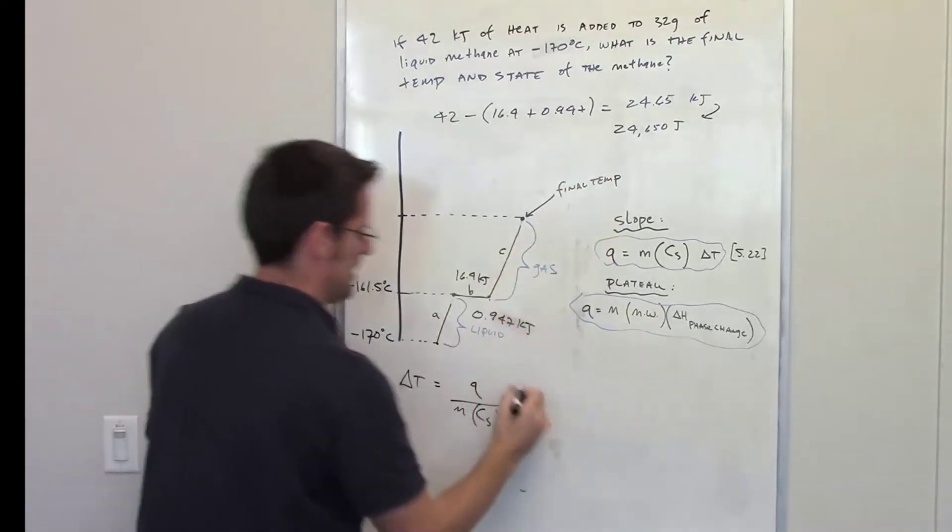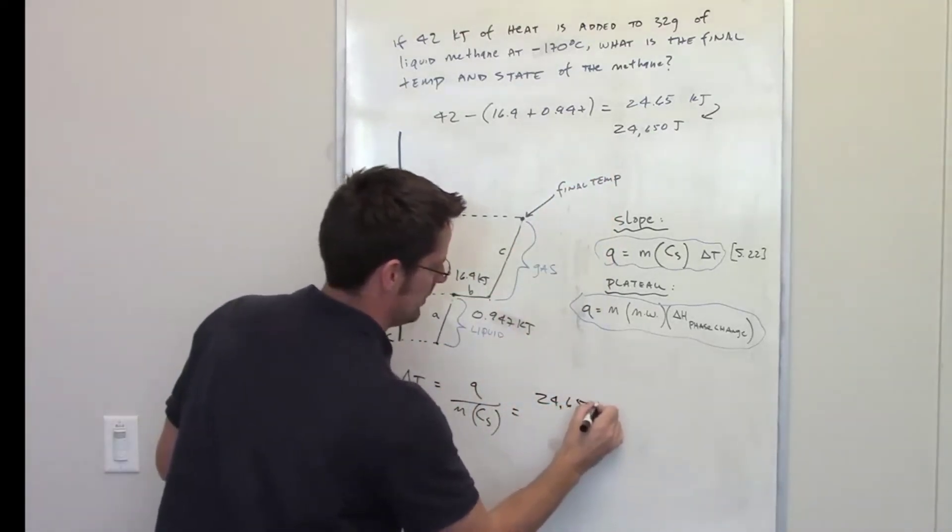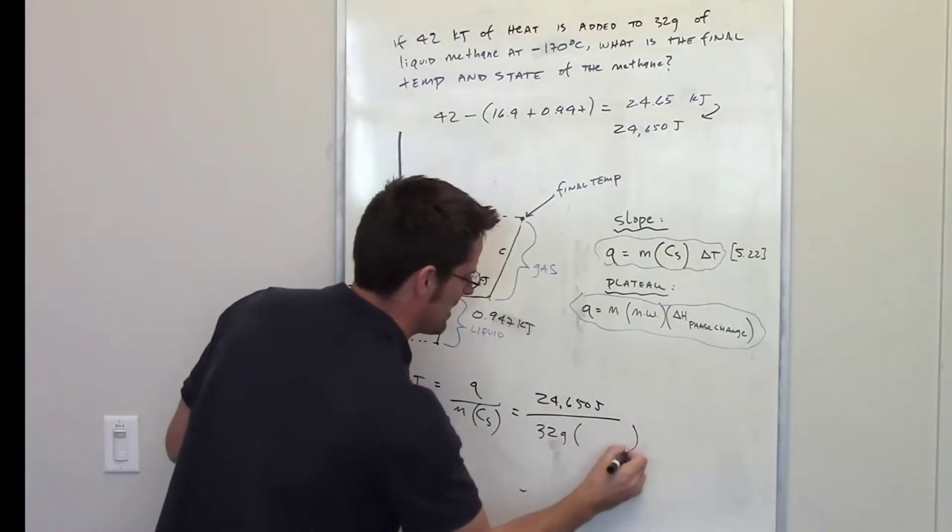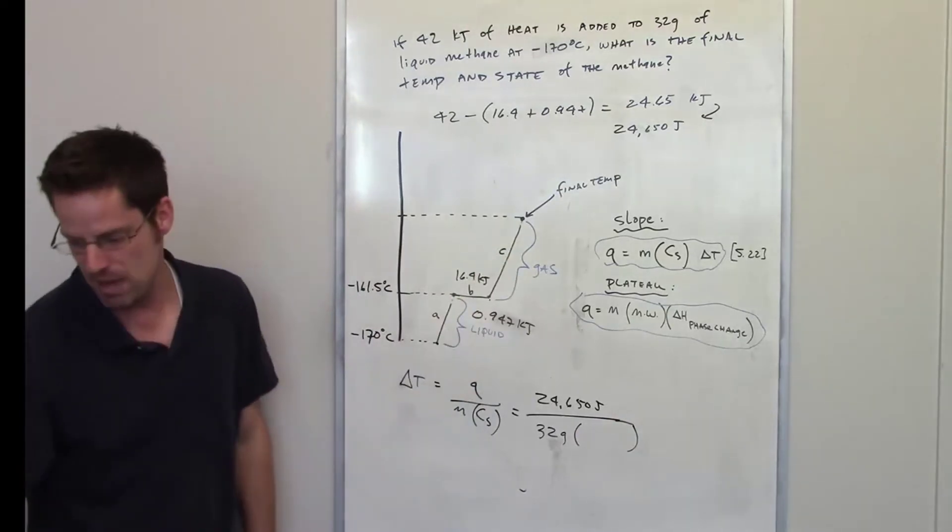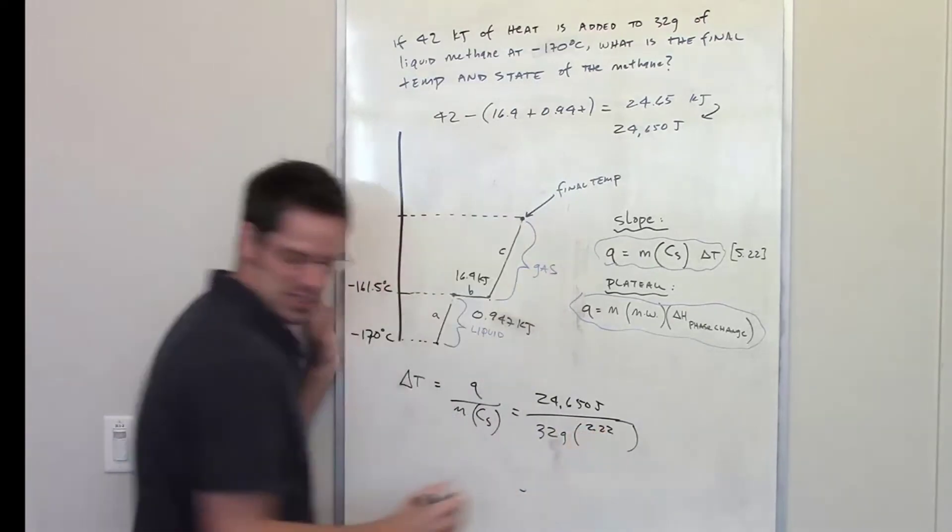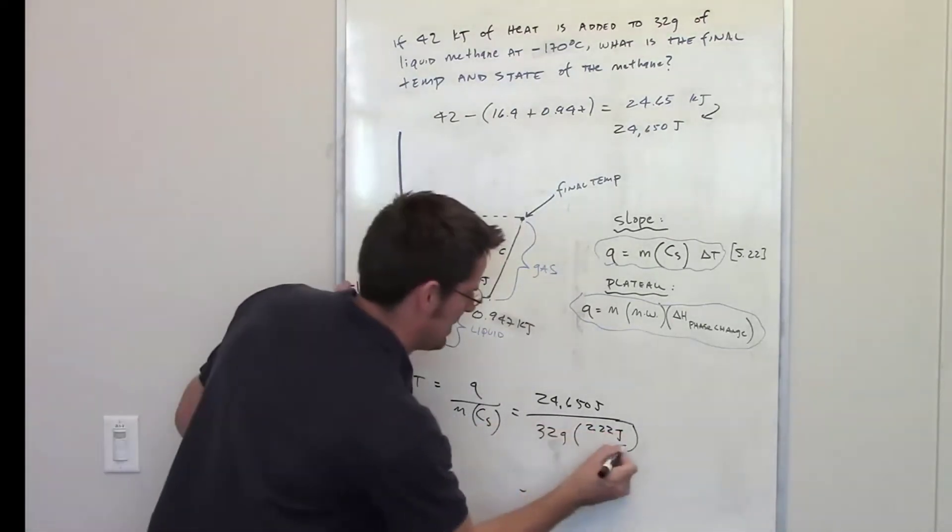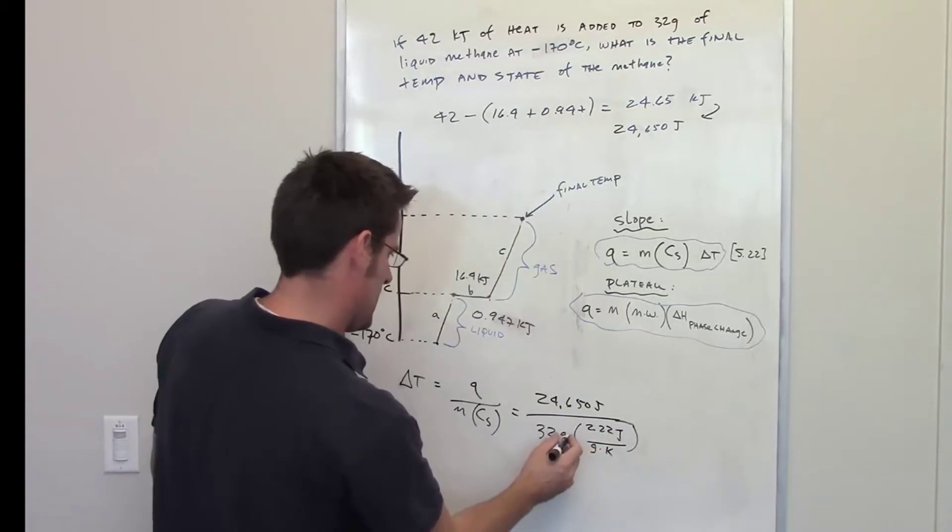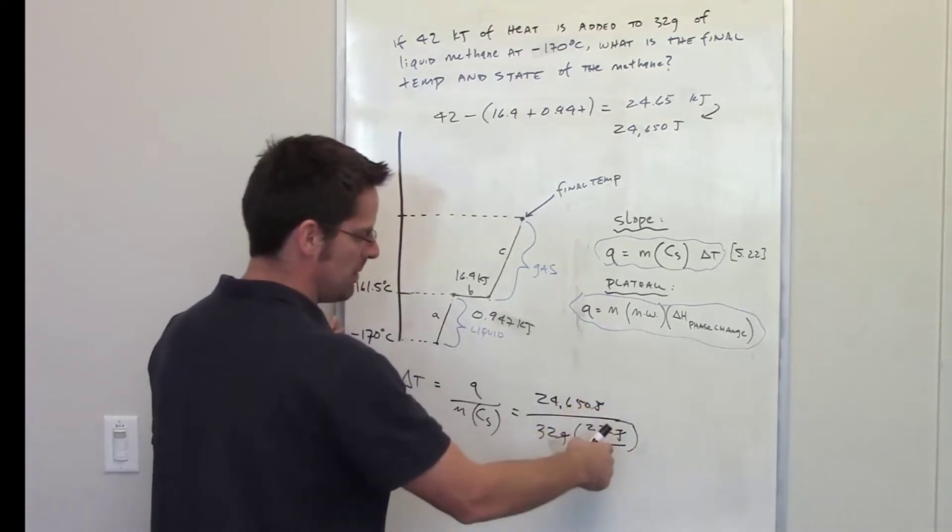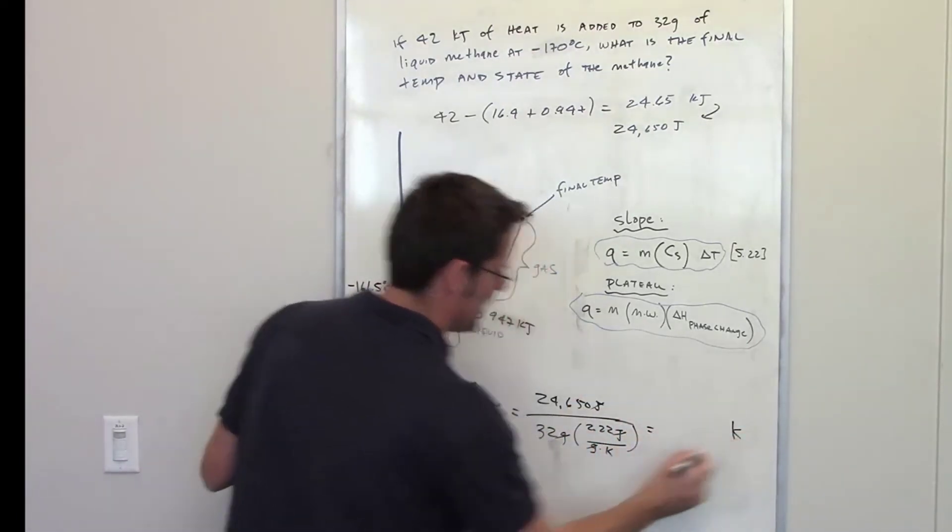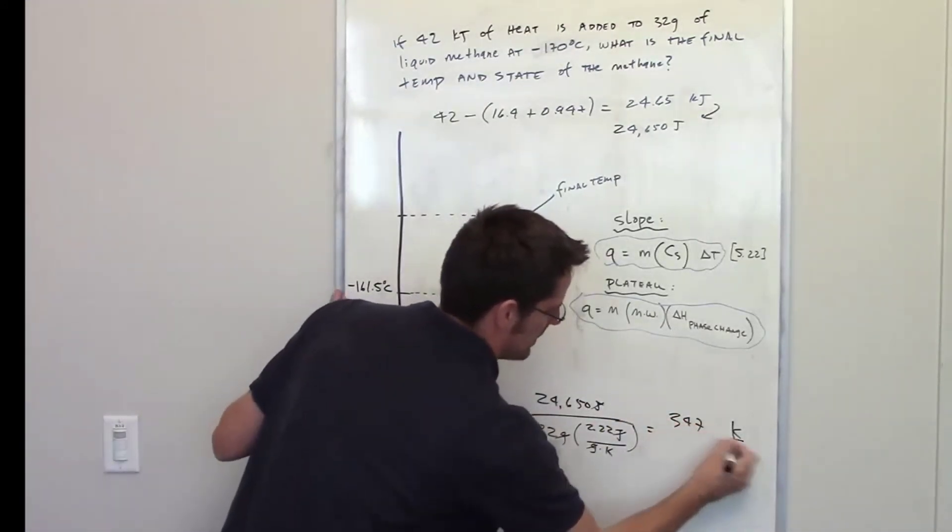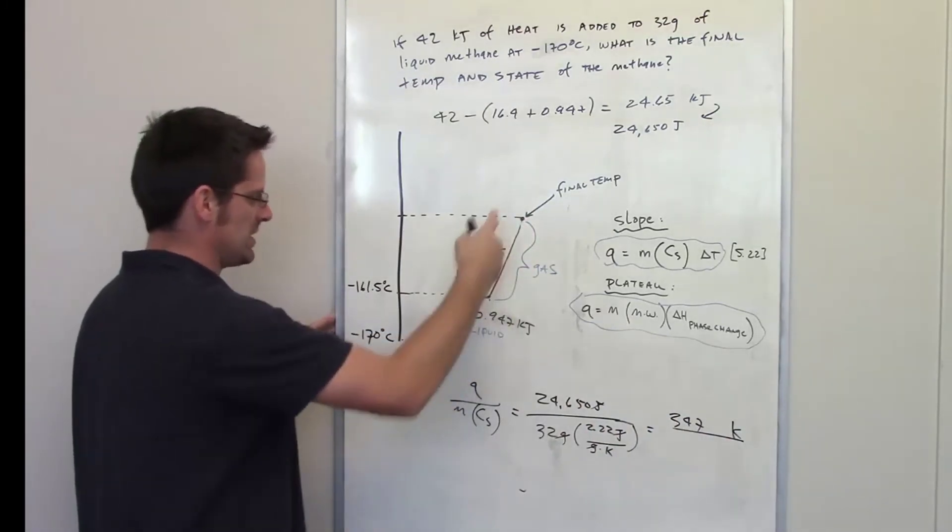So Q is 24,650 joules, and I'm going to divide that by the mass I've been given, which is 32 grams, multiplied by the specific heat of now gaseous methane, which has been given to me in the problem as 2.22 joules per gram Kelvin. My grams cancel each other out, my joules cancel each other out. My Kelvin is in the denominator of the denominator, which means it's in the numerator. And when I crank that out in my calculator, I get 347 kelvins. So I'm basically increasing the temperature 347 kelvins.